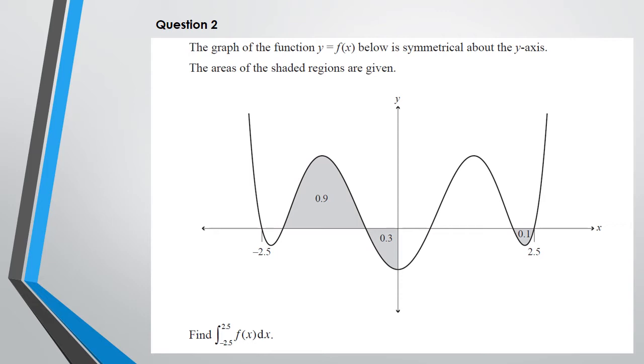Okay, so question two. There's a reason why I didn't actually put it up in the front there because it was this type of big question here. What we know is this: the graph of the function f(x) below is symmetrical about the y-axis. So along the y-axis, the graph is symmetrical. The areas of the shaded regions are given - we got 0.9, 0.3, and 0.1. Now it says find the integral between 2.5 and negative 2.5.